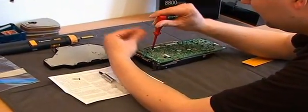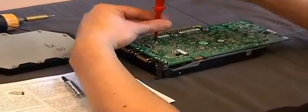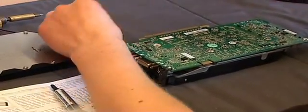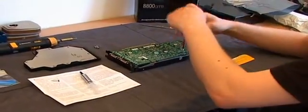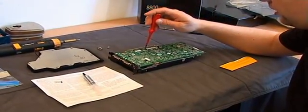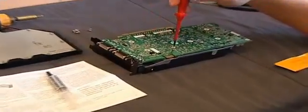First of all we take off all the screws. Don't throw them away, we need them for the cooler. In the middle just take off the big ones, not the small ones.